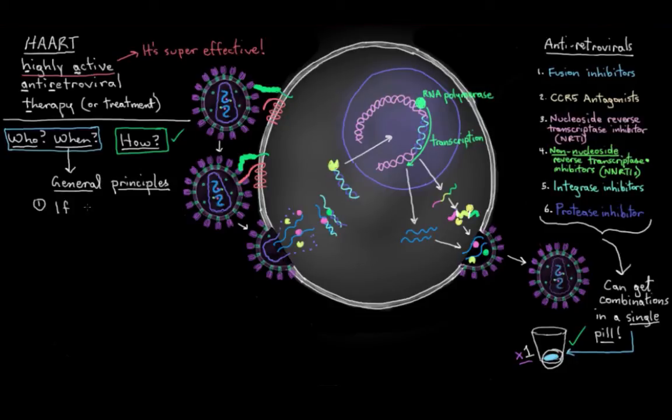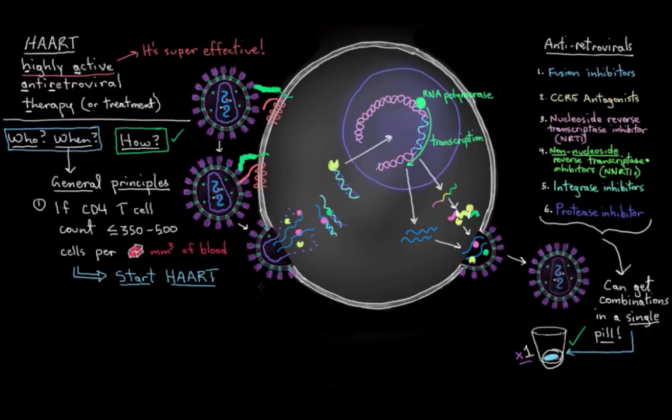So for one, we know that if your CD4 T cell count is less than about 350 to 500 cells per cubic millimeter of blood, then it's time to start HAART. Remember, CD4 count is sort of used as a marker for how far along the illness is, right? The lower the CD4 count, the more damaged the immune system is.